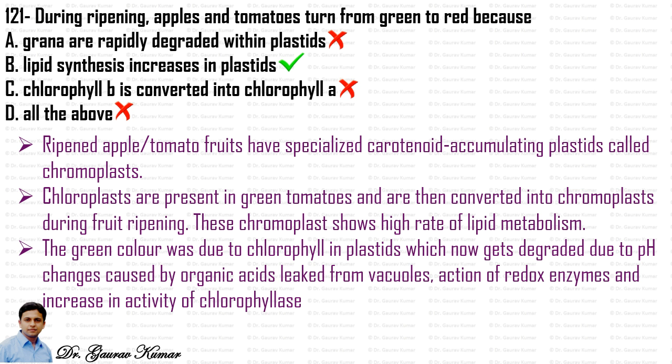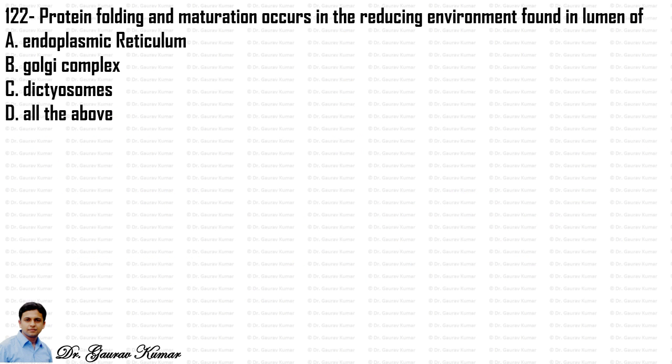So the answer to this question is that during ripening, apples and tomatoes turn from green to red because lipid synthesis increases in plastids.